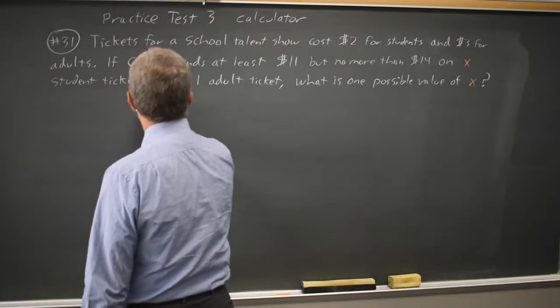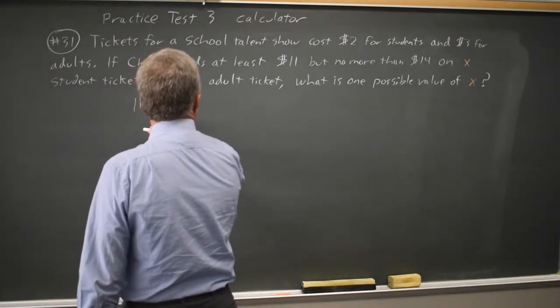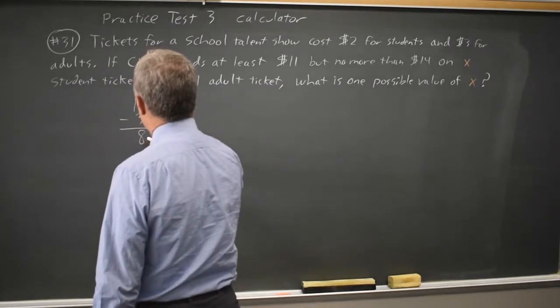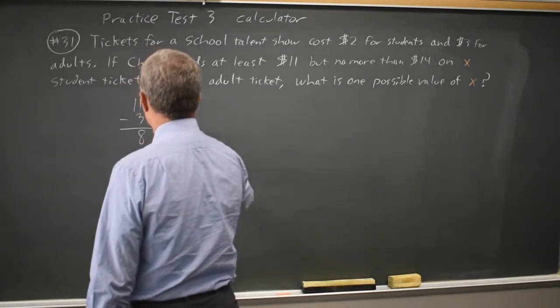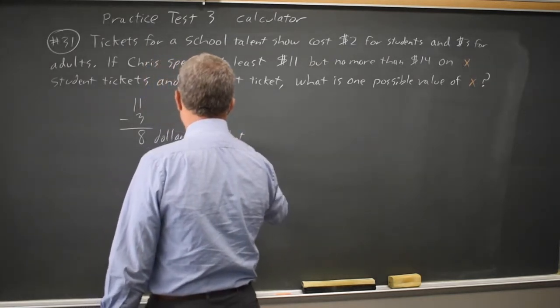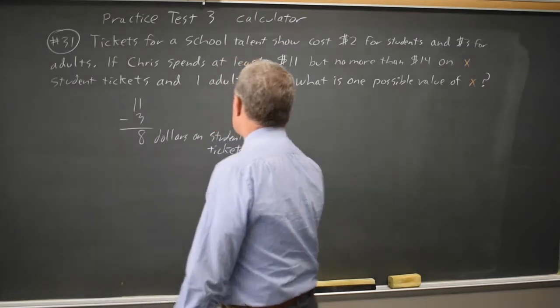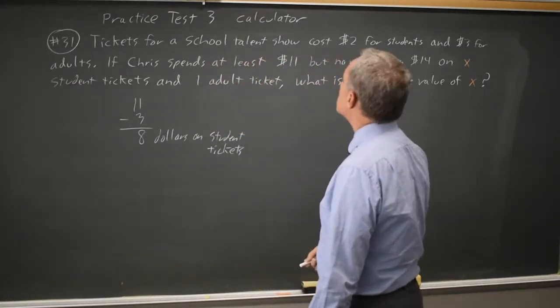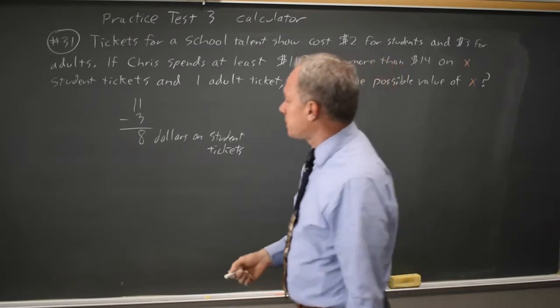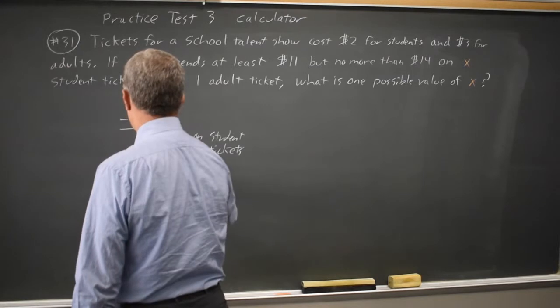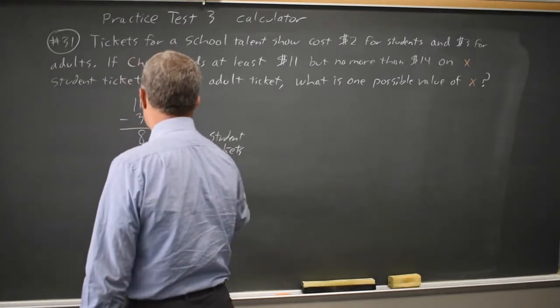So he spent $11 with one adult ticket. That would be $8 on students. If he spent $8 on student tickets, the number X of student tickets would be 8 over 2 equals 4, the number of student tickets.